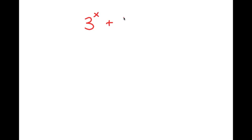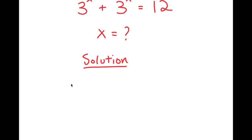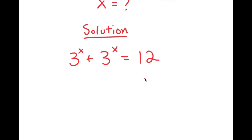In this video, I'm going to be solving the equation 3 to the power of x plus 3 to the power of x equals 12. My only variable is x, so that's what I'm solving for. Let me rewrite the equation to have more solving space: 3 to the power of x plus 3 to the power of x equals 12. I'll start by factoring out 3 to the power of x from the left-hand side.